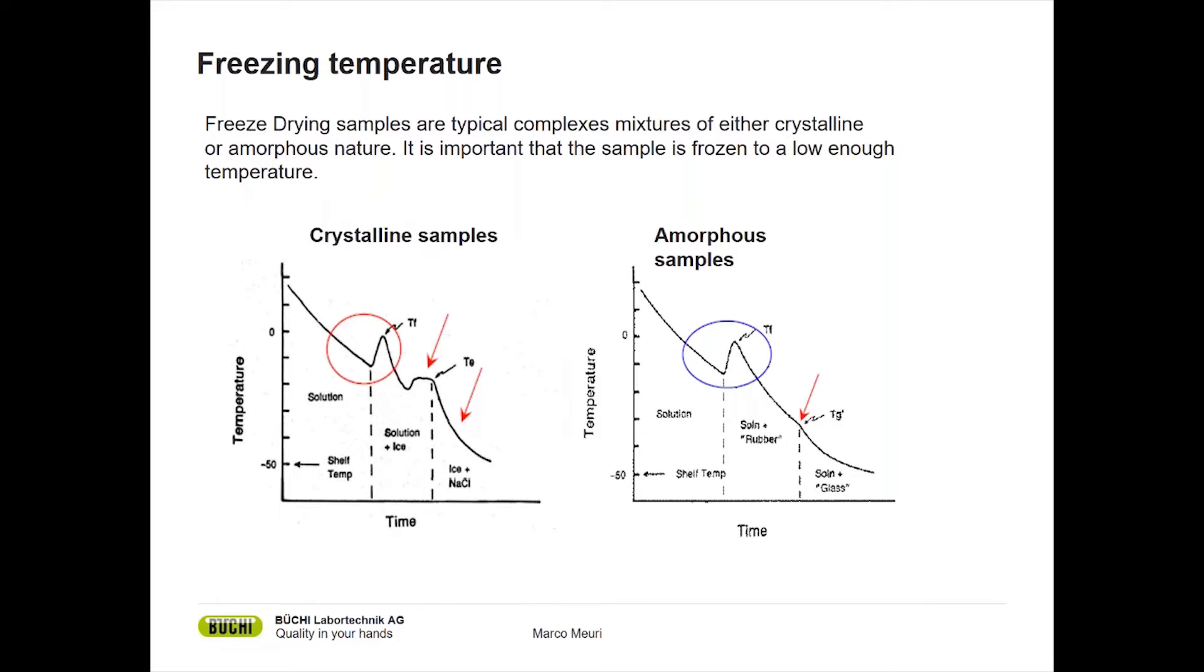If we look at the example of a crystalline sample, water and salt, if we freeze this sample you can see in the graph on the left side we first go down in temperature, then we go to an area called super cooling. That means the sample goes even below its freezing point. Then first crystals will be formed, the temperature slightly increases again and the sample crystallizes. It forms ice. This small peak we can see here is the freezing temperature of the sample.